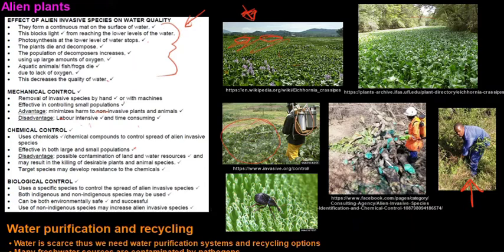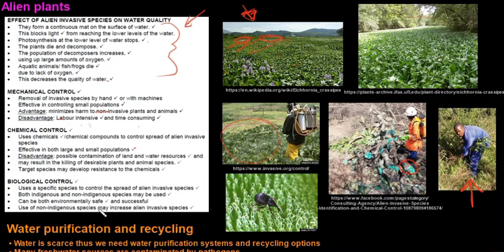Sometimes trees are chopped down and chemicals are painted onto the plants to stop them from growing. Biological control uses a specific species to control the spread of alien species. Both indigenous and non-indigenous species may be used, and it can be environmentally safe and successful. However, the use of non-indigenous species may increase alien invasive species. For example, a type of insect is used that targets that specific plant.